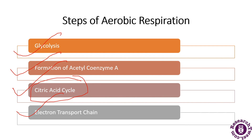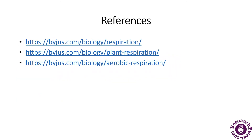The fourth and last step of aerobic respiration is the electron transport chain. In this phase, a large number of ATP molecules are produced by transferring electrons from NADH and FADH2. A single molecule of glucose creates a total of 34 ATP molecules. The electron transport chain is the final step of aerobic respiration.